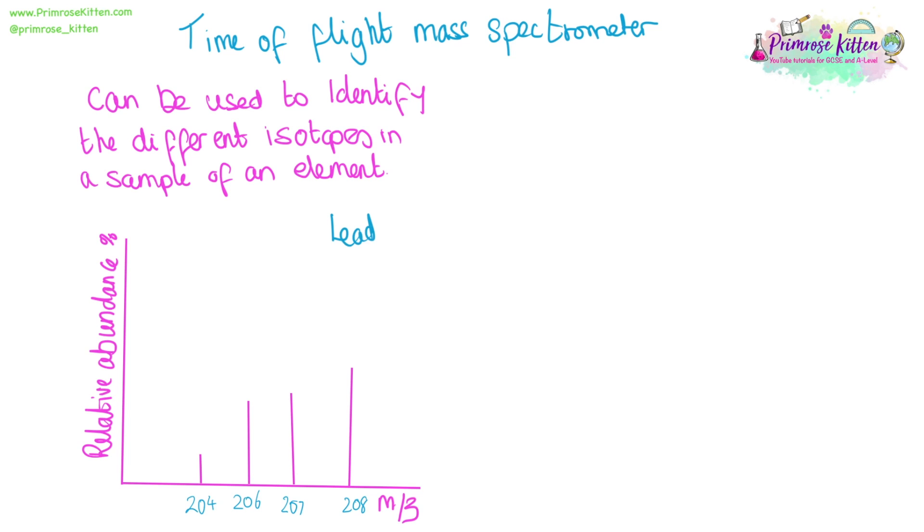For this example here, we're going to look at lead and we have four different isotopes of lead on this graph, all at slightly different abundances within the sample.